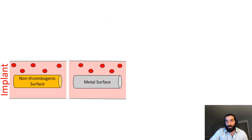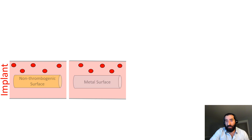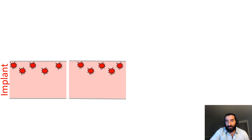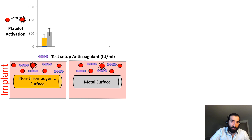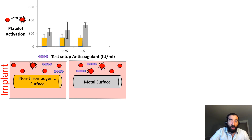Let's look at the thrombogenicity of the implant surface. You cannot compare a metal surface and a non-thrombogenic surface in just blood because even without the test samples, the blood in the test setup will get activated. So you need to use a certain amount of anticoagulant to prevent blood activation and then compare the two surfaces. If you use a very high amount of anticoagulant, you won't really see the differences and you might think the surface is non-thrombogenic. But as you decrease the amount of anticoagulant in your test setup, you'll see the difference in the thrombogenicity of the surfaces.